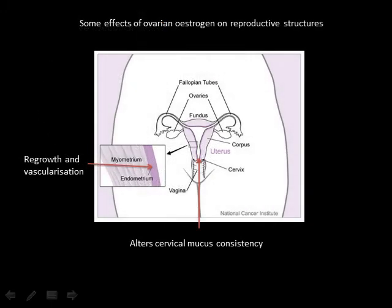Oestrogen does several things. It promotes rapid cell division, and that results in regrowth of the endometrium that was shed in the last period. Oestrogen also alters the consistency of the cervical mucus, making it sperm friendly.